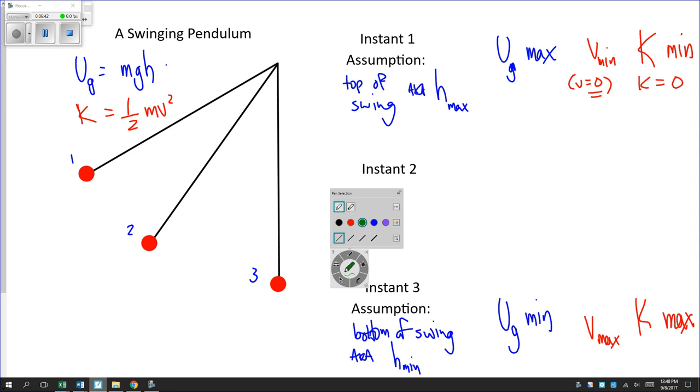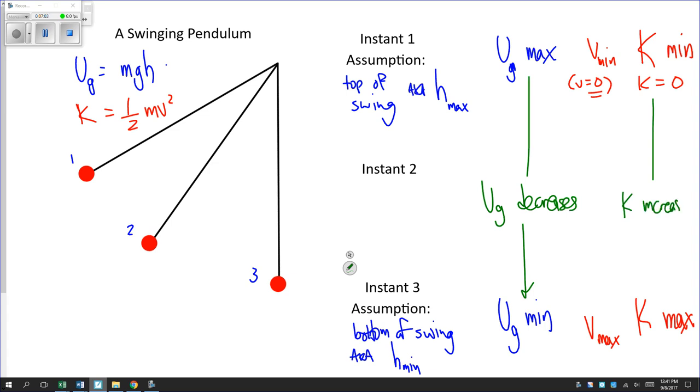As we go from one to three, Ug goes from max to min, so Ug decreases. And K goes from min to max, so K increases. Or you could say if you go the other way, from three to one, that U increases and from three to one, that K decreases.